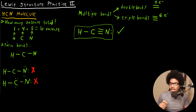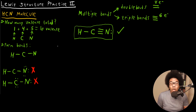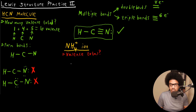The second example I wanted to look at is an ion. All the examples so far have been neutrally charged molecules. What happens when you have an ion? Let's look at NH4+, a cation. You start this problem the exact same way — count up how many total valence electrons you have.